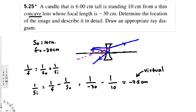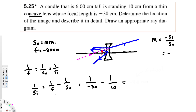To determine whether the image is upright or inverted, we use the magnification equation: m = −s_i / s_o. The image distance s_i is negative 7.5 centimeters. Plugging into the magnification formula gives us minus (−7.5) over 10, which is positive 7.5 over 10.